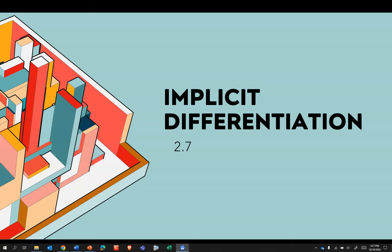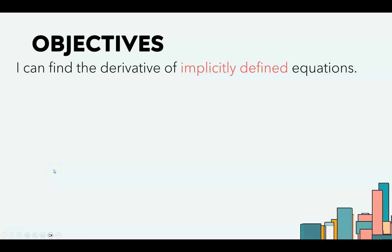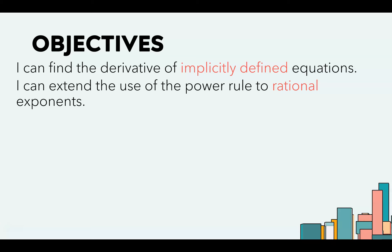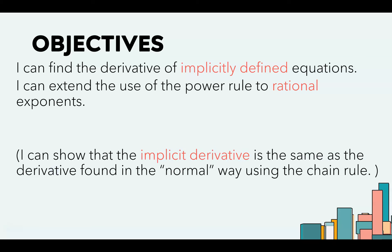Unit 2, lesson 7 is implicit differentiation. If you don't know the chain rule yet, you probably shouldn't jump to implicit differentiation, because the best way to say it is implicit differentiation is the chain rule done symbolically. By the end of this lesson you should be able to find the derivative of implicitly defined equations. Hopefully you'll understand that implicit differentiation is just doing the chain rule, written symbolically.